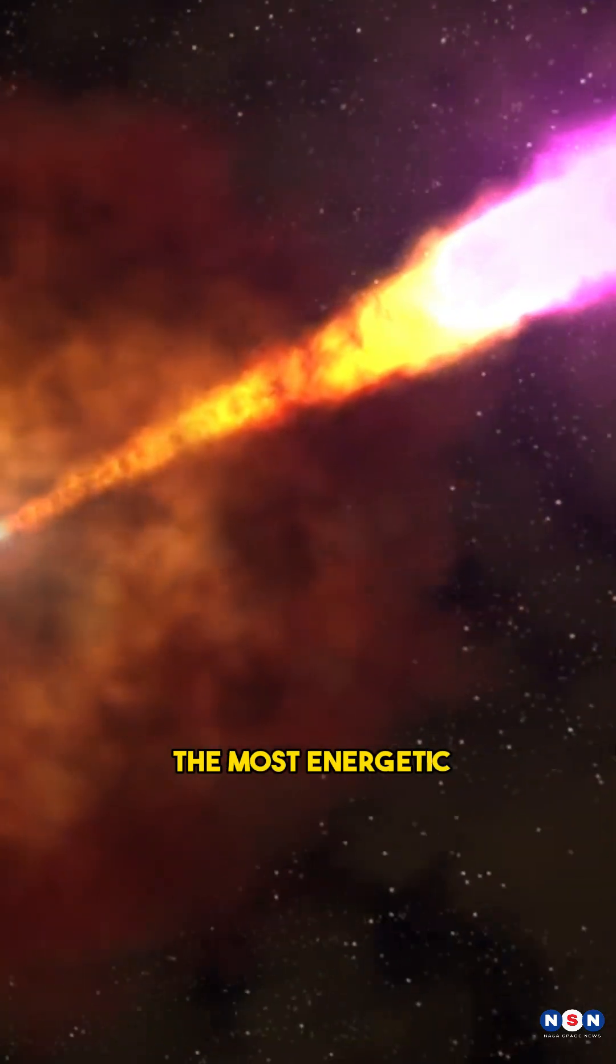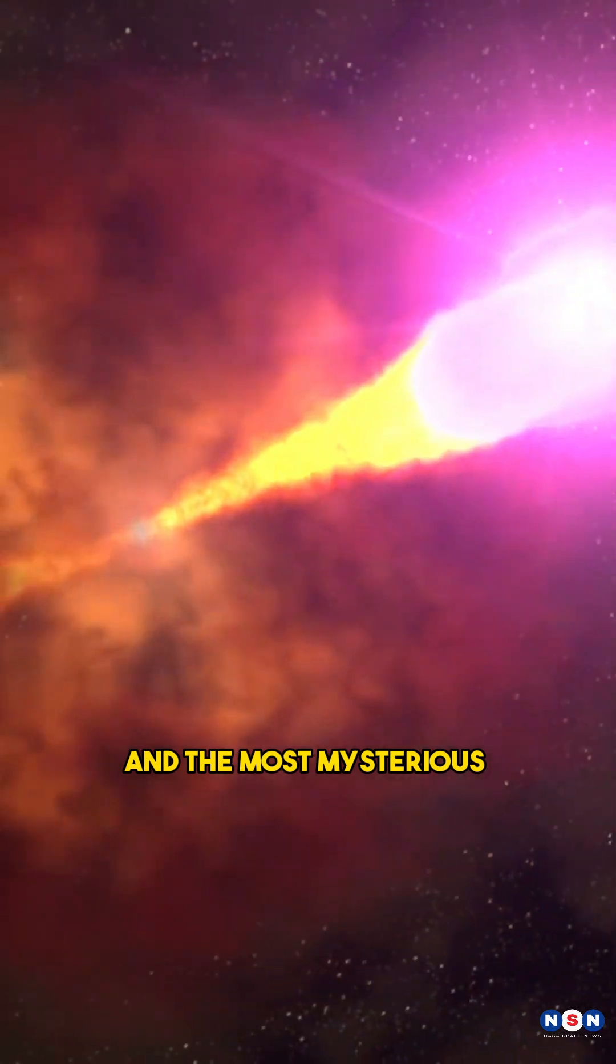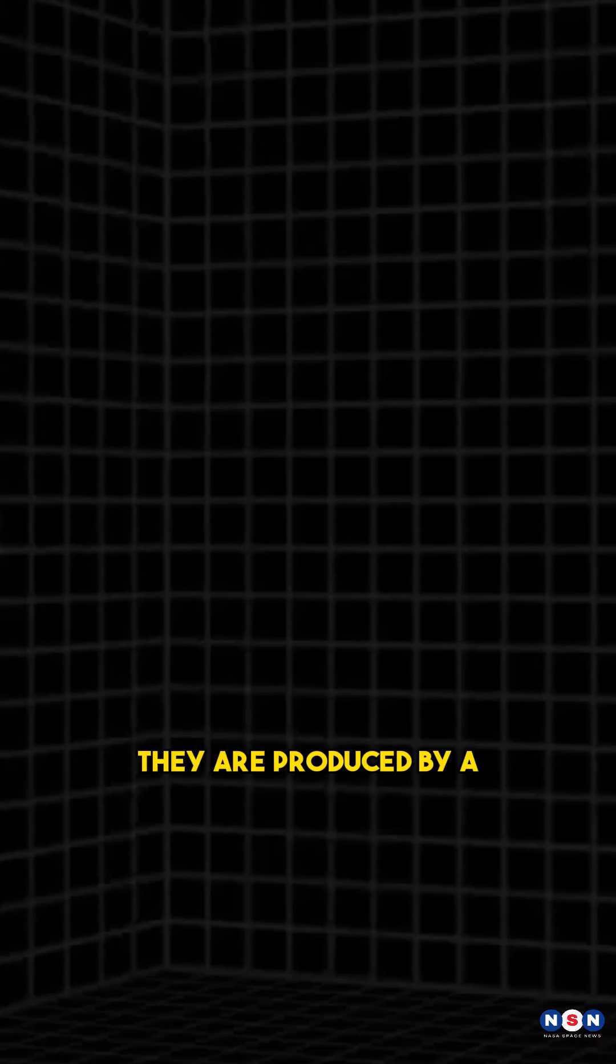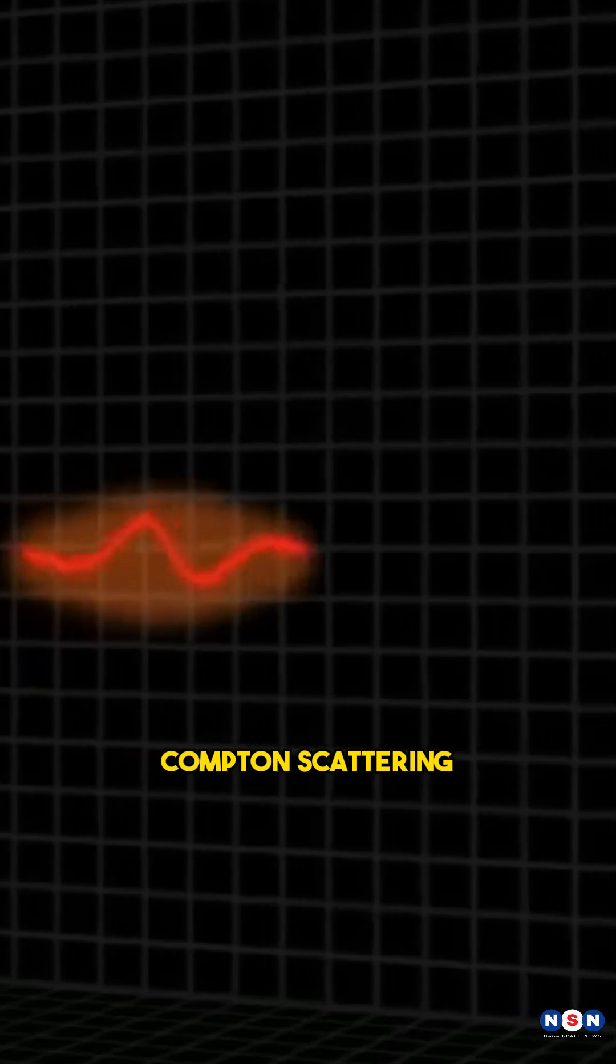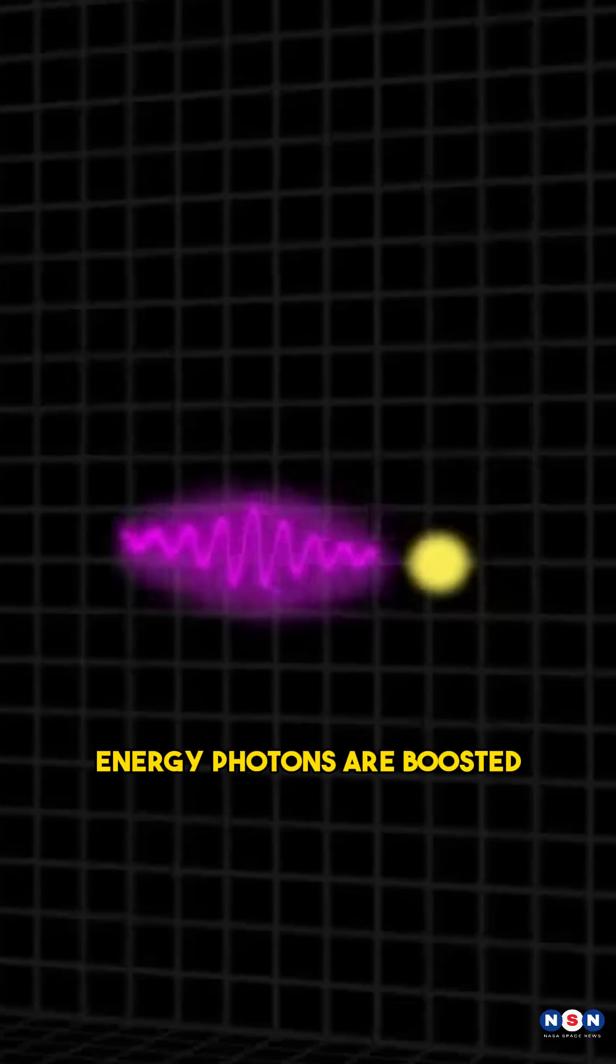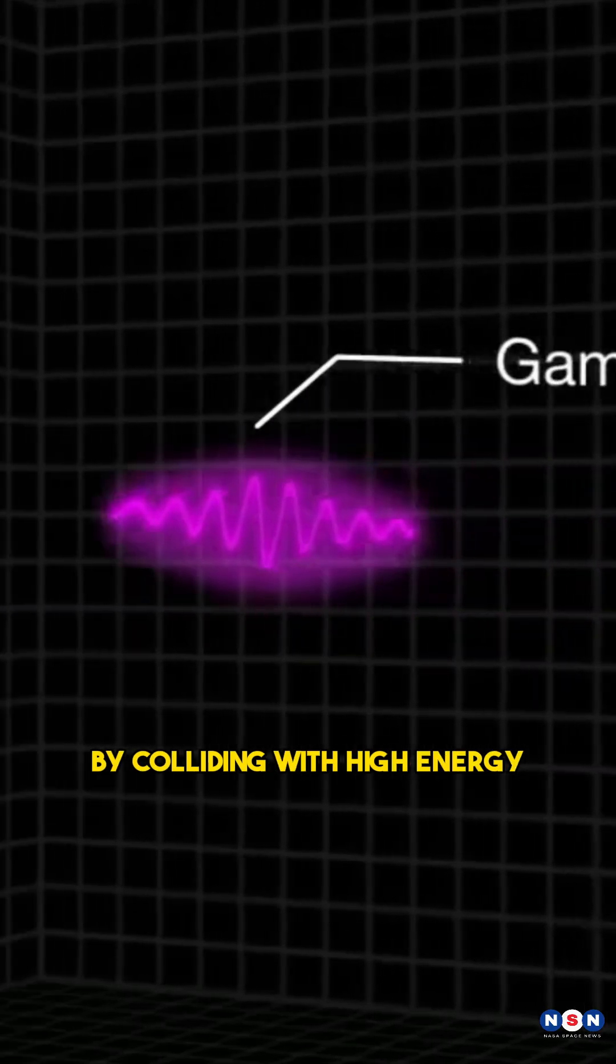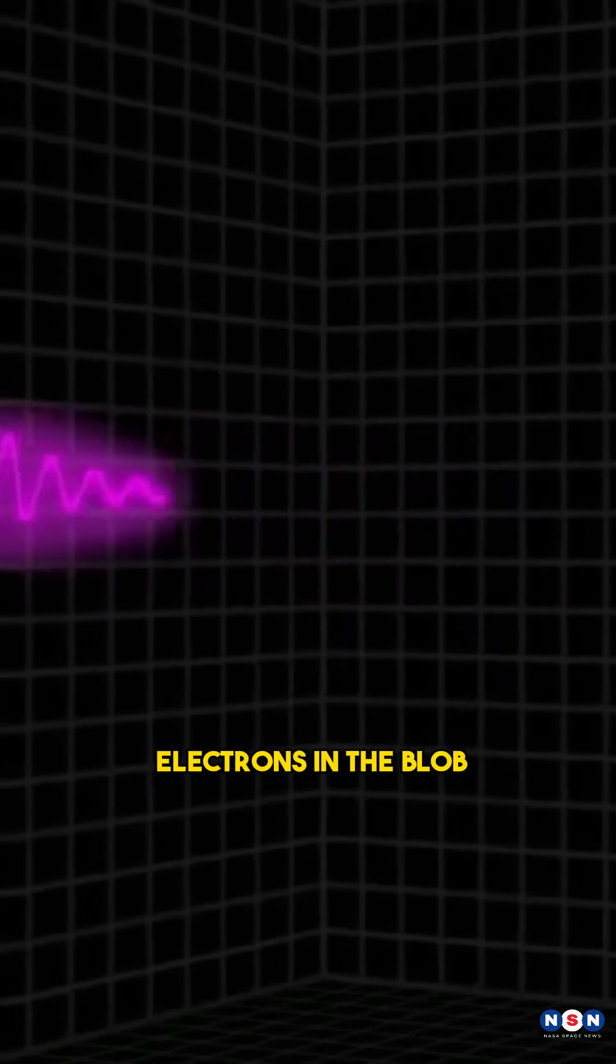The gamma rays are the most energetic and the most mysterious part of the blob's radiation. They are produced by a process called inverse Compton scattering, which is when low energy photons are boosted to high energy photons by colliding with high energy electrons in the blob.